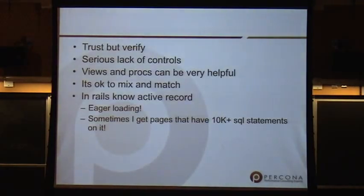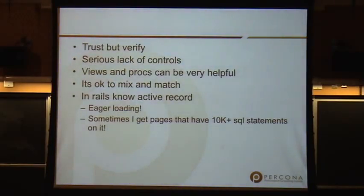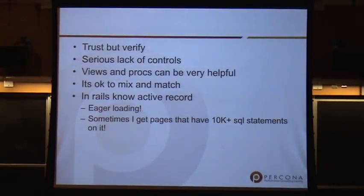Views and stored procedures can be helpful in these cases. One thing I've done in a lot of Rails shops is create a view and use that as the model — completely avoiding table joins in the application because you do the join underneath with the view. In ActiveRecord and Hibernate, eager loading can really help. You need to watch page loads that have 10,000 queries because it will do really dumb things like loop through a lookup table — give me 5,000 order rows, then for each order look up a product type with 10 rows.